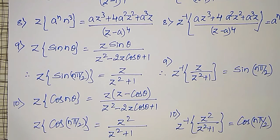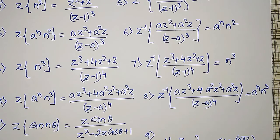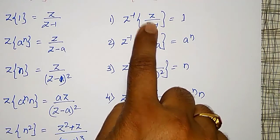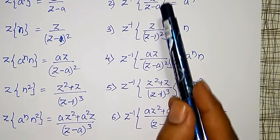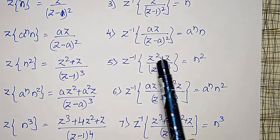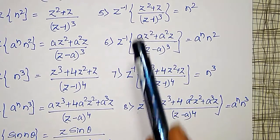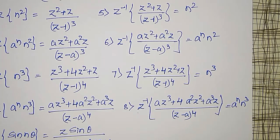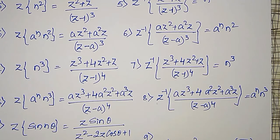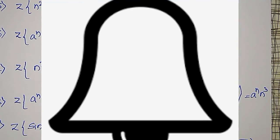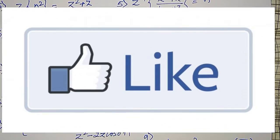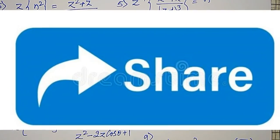These formulas I am going to use in solving inverse Z-transforms in my next videos. One important thing to remember: while finding inverse Z-transforms, the numerator must contain at least one Z term. You can see that Z appears in every numerator — Z, AZ, Z², and so on. The numerator should contain Z at least, or you can convert the numerator into standard forms to find the inverse Z-transform easily. If you have not yet subscribed my channel, please subscribe. Don't forget to hit the bell icon for notifications. Like, comment, and share this video. Thank you friends.